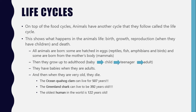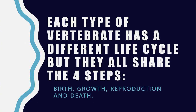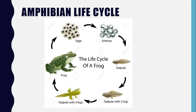I looked up how old some animals can get. A clam can live for 507 years — that's the oldest clam ever found. The second oldest animal was a shark at 392 years old. And the oldest human in the world was 122 years old. The thing to remember is that each type of vertebrate has a different life cycle, but they all share the same four steps: birth, growth, reproduction, and death. We are going to look at the life cycles without the sad part — the death part — and focus on how they grow and reproduce.